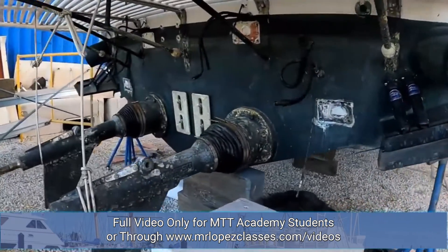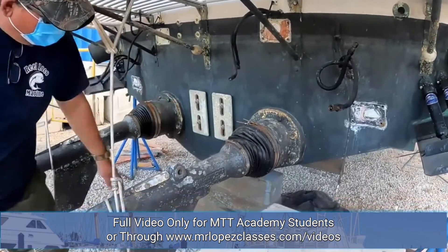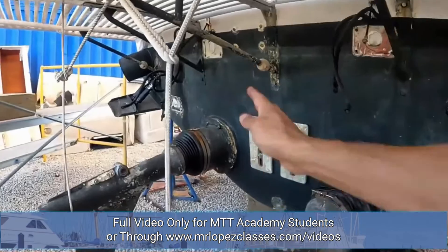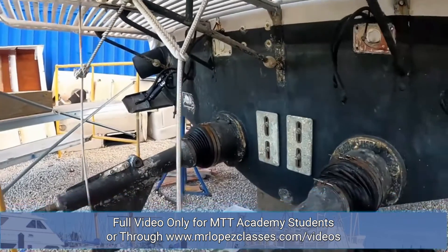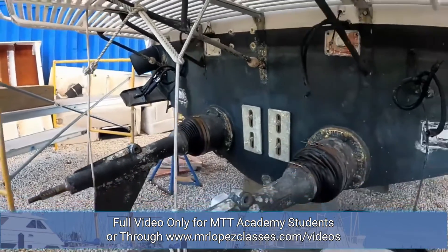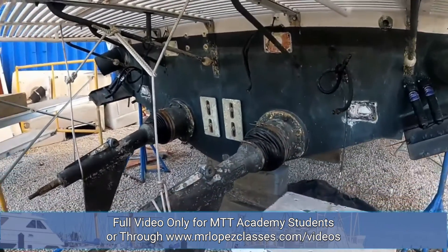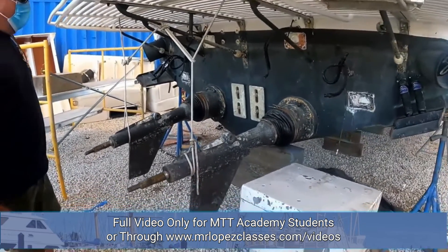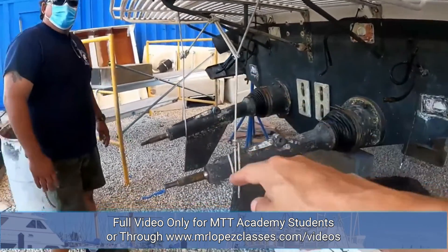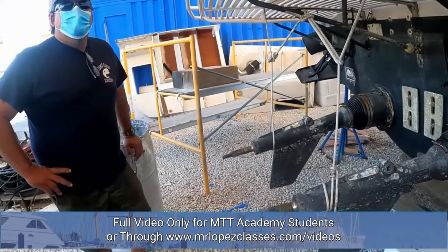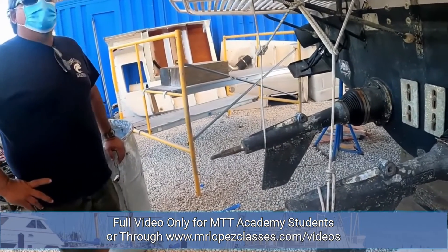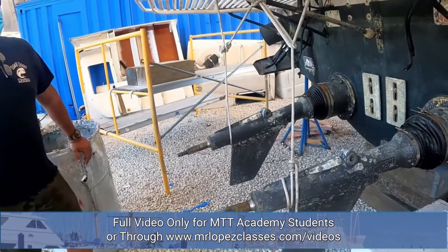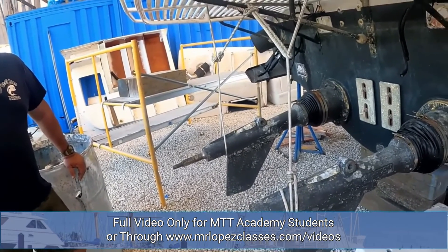This is the surface drive. There's a boot to protect the U-joints from water getting in. There's one actuator here and another lateral actuator, so you can steer and adjust the angle up and down. The advantage of this system is that the propellers work on ventilation, not cavitation, because roughly half the surface of the propeller is out of the water.